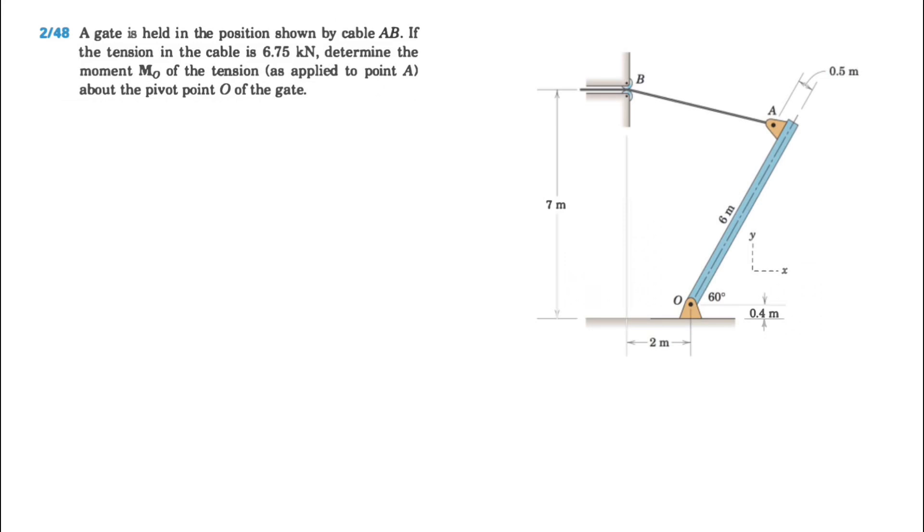What's up guys, welcome back. We're going to be solving another question today from the second chapter of Merriam textbook, question 48. We have a gate that is held in the position shown by cable AB.